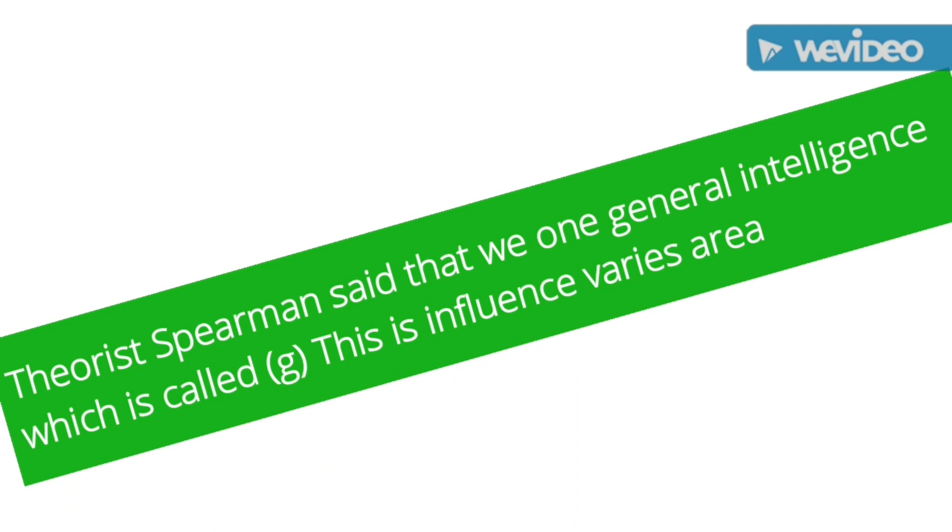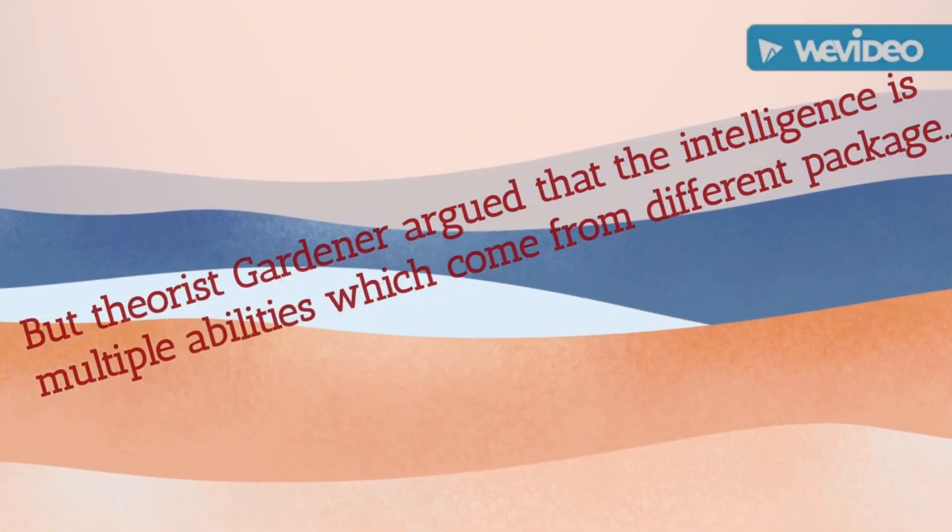Theorist Spearman said that we have one general intelligence which is called g. This influences us.